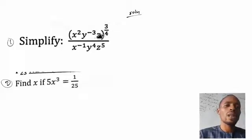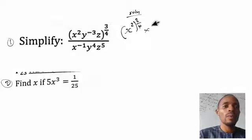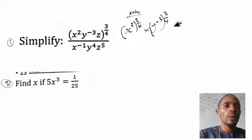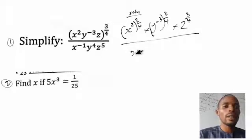So we get s raised to power two, then multiplied by three over four; then y raised to power minus three multiplied by three over four; then z — which has no written exponent, so it is z raised to power three over four. All of this is divided by s raised to power minus one, times y raised to power four, times z raised to power five.